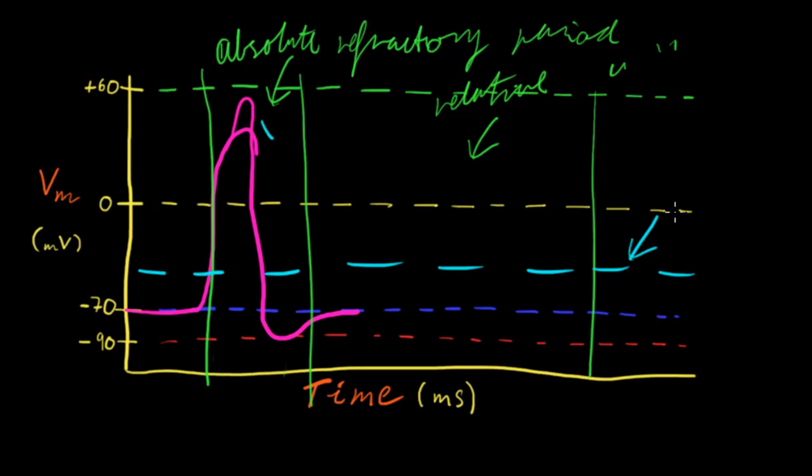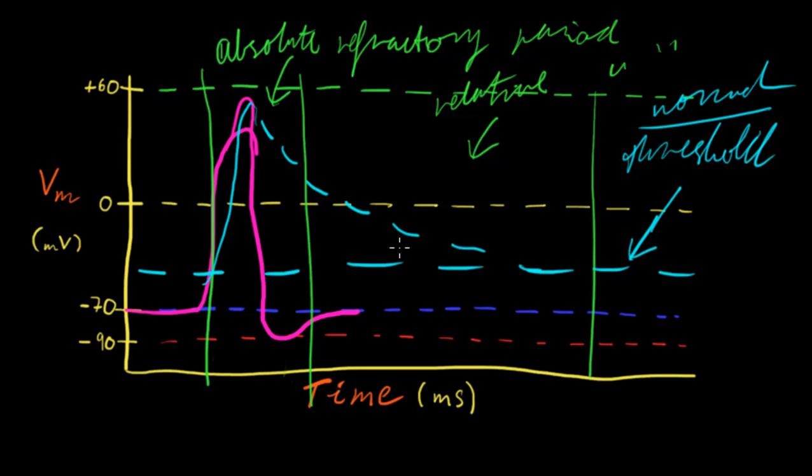This is normal, right? So once we've had an action potential, the threshold actually jumps up and then sort of comes down slowly, and this is caused by the slow potassium ion channels. It takes a little while to get back to normal, to the normal resting conditions.